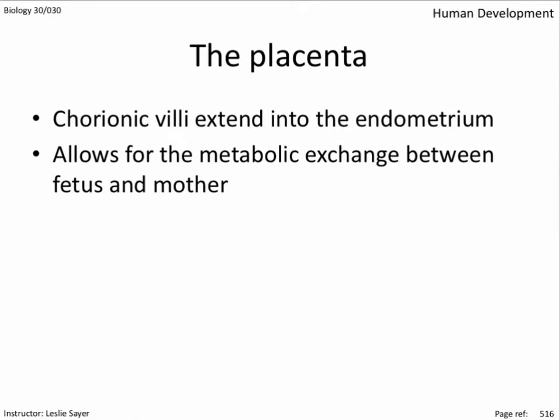The placenta allows for metabolic exchange between fetus and mother. It transports and stores food — carbohydrates, proteins, fats — for a constant supply of nutrients, transports away wastes like urea and carbon dioxide, transports oxygen from mom to fetus, secretes hormones estrogen, progesterone, and hCG, allows for the exchange of maternal and fetal hormones, and transports maternal antibodies for immunity at birth.